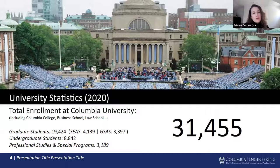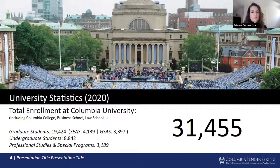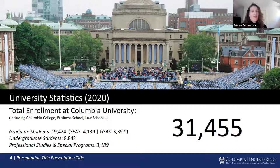Columbia University was founded in 1754 as King's College by the Royal Charter of King George the Second of England. It is the oldest institution of higher learning in the state of New York and the fifth oldest in the United States. The university has three undergraduate schools, 13 graduate and professional schools, a medical center, four affiliated colleges and seminaries, 25 libraries, centers for the arts, and more than 100 research centers and institutes.